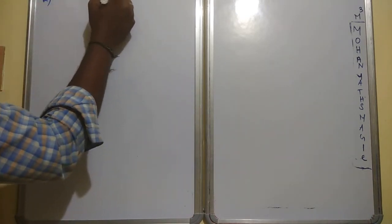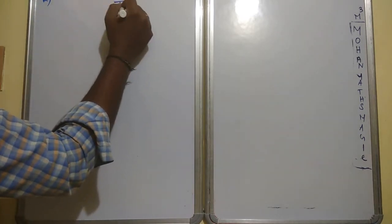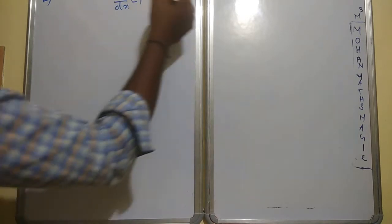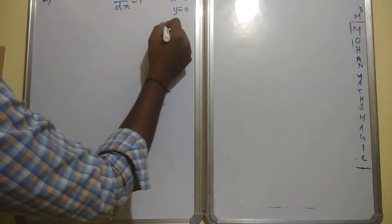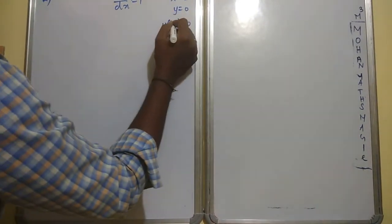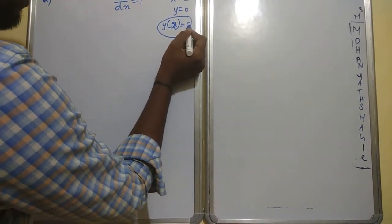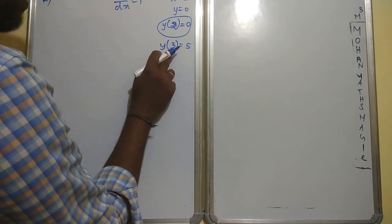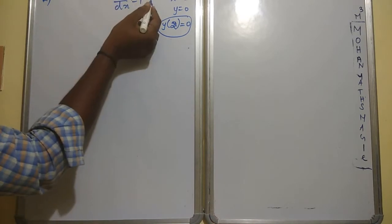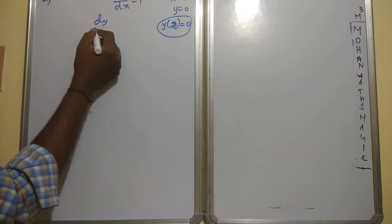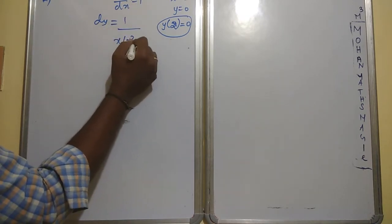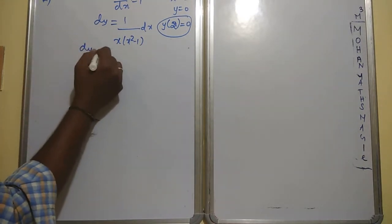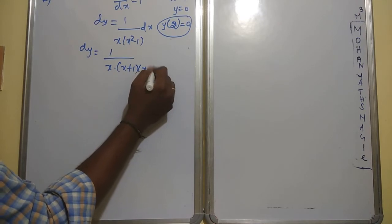Question 12: x(x²-1)·dy/dx = 1, where x = 2, y = 0. They may also write this as y(2) = 0, meaning x = 2 and y = 0. Cross multiply: dy = 1/[x(x²-1)] dx = 1/[x(x+1)(x-1)] dx.